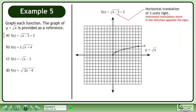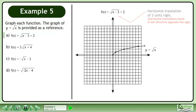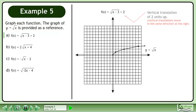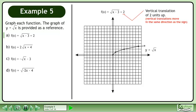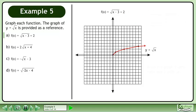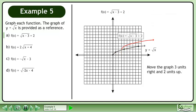There is a horizontal translation of 3 units right. There is also a vertical translation of 2 units up. Move the graph 3 units right and 2 units up to get the graph of f equals the square root of x minus 3 plus 2.